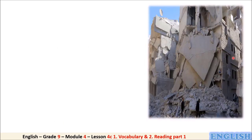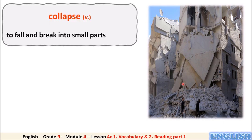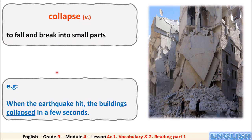Look at these buildings — they collapse. 'Collapse' is a verb which means to fall and break into small parts. For example, when the earthquake hit, the buildings collapsed in a few seconds.